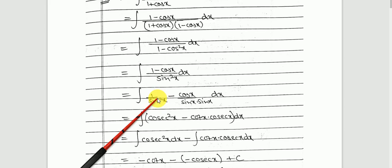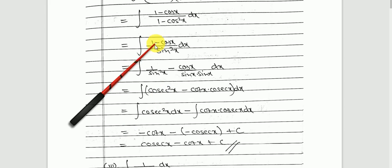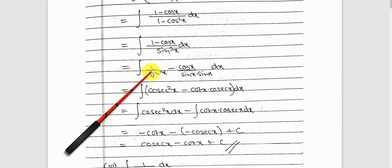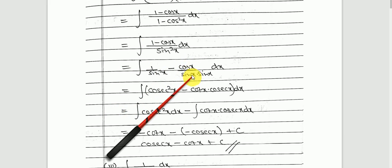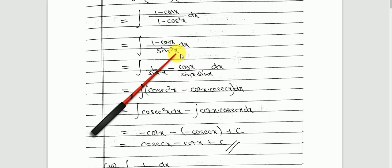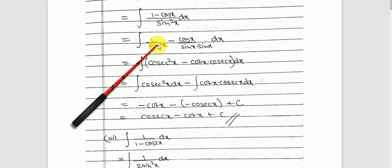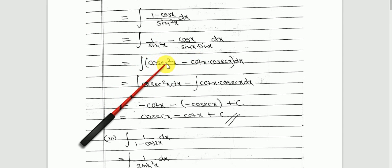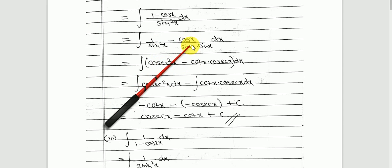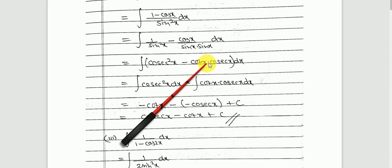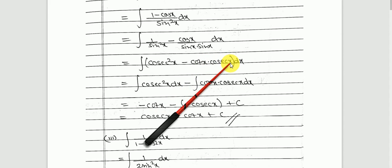After that I can write this as 1 upon sine squared x minus cos squared x upon sine squared x. The sine squared x in the denominator can be written as sine x times sine x. So 1 upon sine squared x is cosec squared x, and cos x upon sine x times sine x means cot x times cosec x.